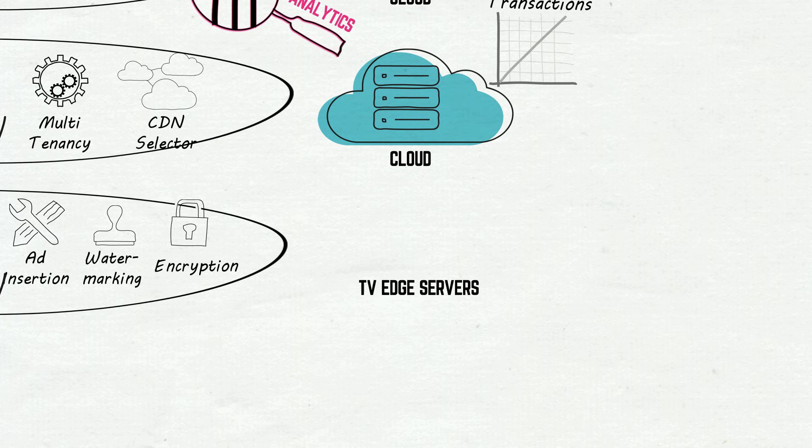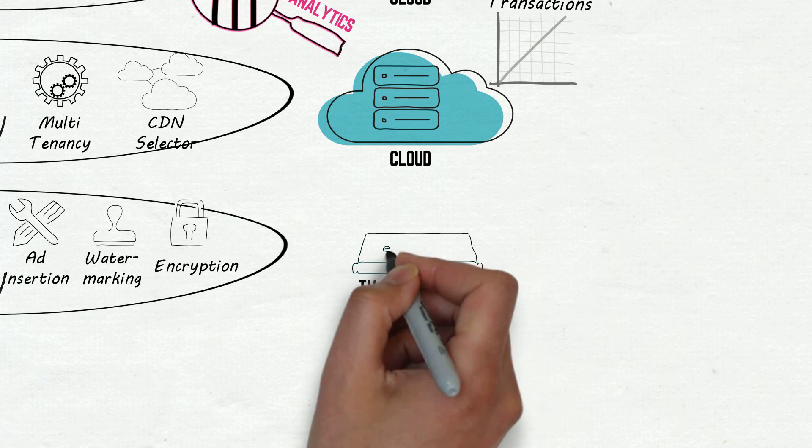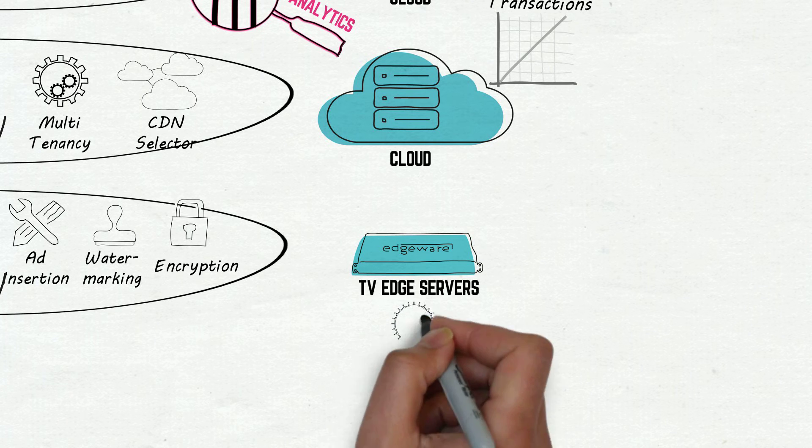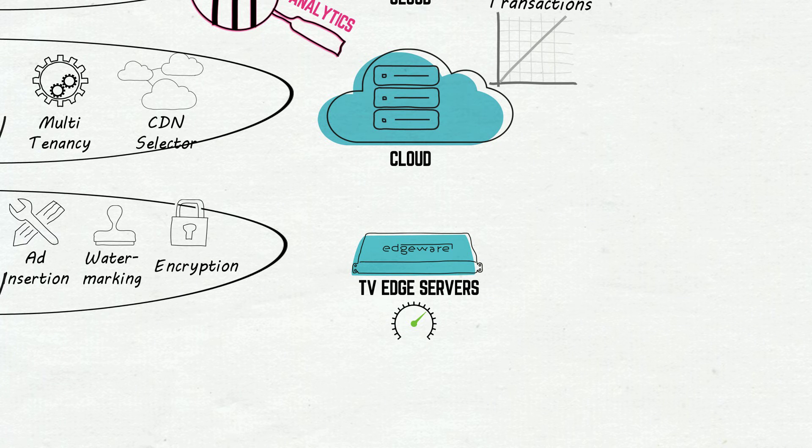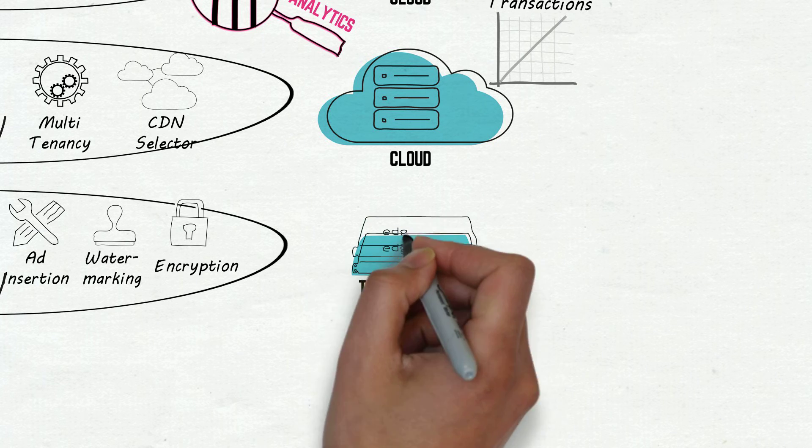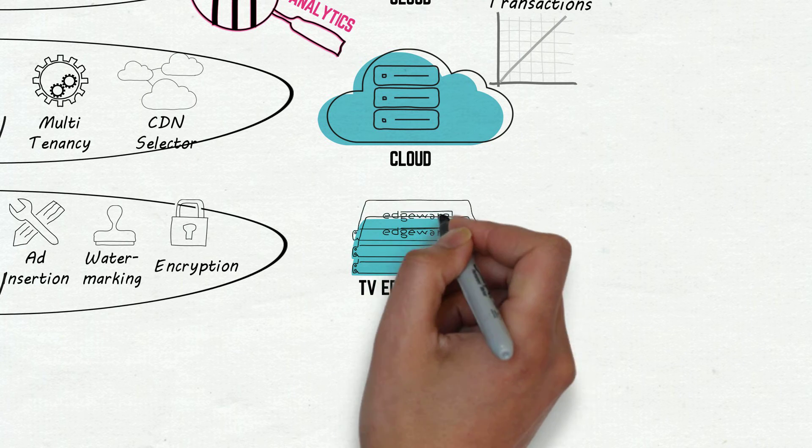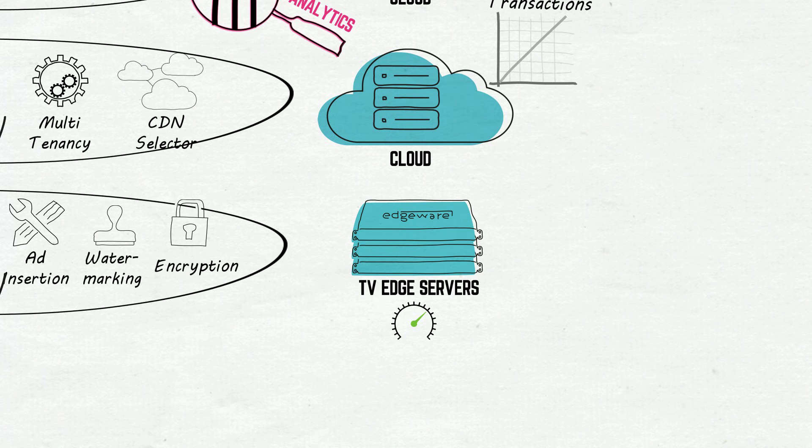It uses purpose-built TV edge servers with hardware acceleration so they don't suffer from the usual CPU bottlenecks between storage and streaming. They can be deployed individually or in a virtualized cluster. They use far less power and space than conventional servers and require minimal maintenance.